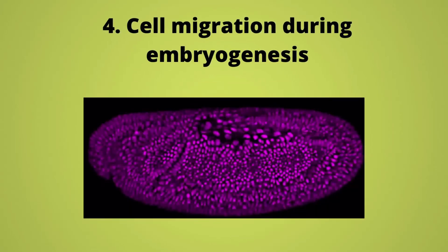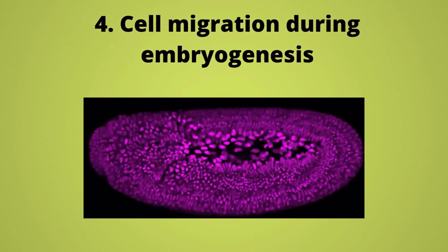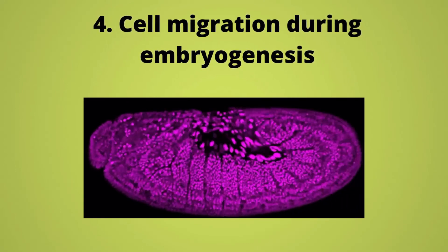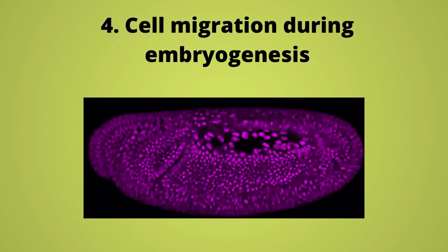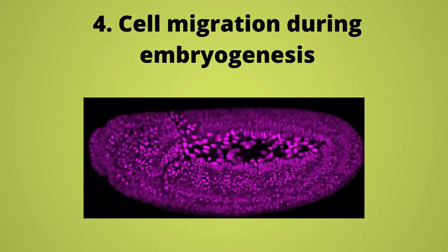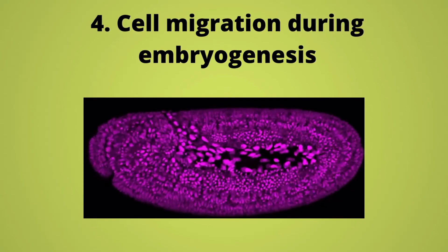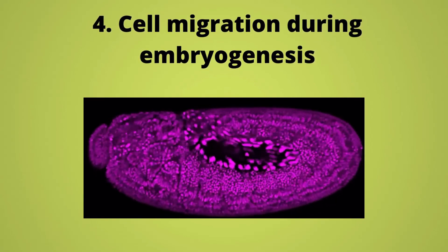The migration of cells of the neural crest in order to form the pigment cells of the skin, teeth and the cartilage of the jaws all depend upon the motile functions of the microfilaments.